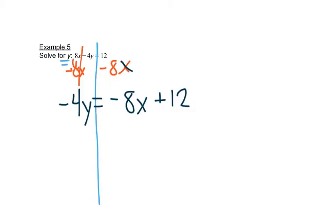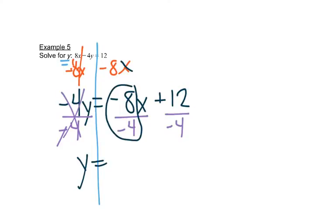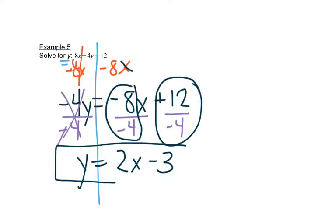Then I need to divide by negative 4 to get y by itself. Now when I divide over on the right hand side I want to divide everything by negative 4. We can also show that by dividing each piece by negative 4. And in the next chapter that will help us too. So here I get y equals. And then here I'd have negative 8 divided by negative 4 is a 2x. And then 12 divided by negative 4 is a negative 3. So y is equal to 2x minus 3.